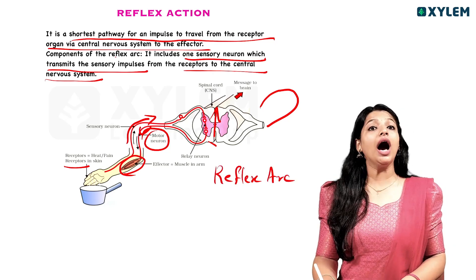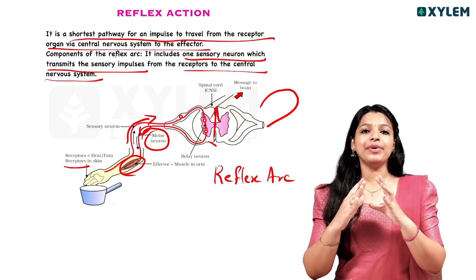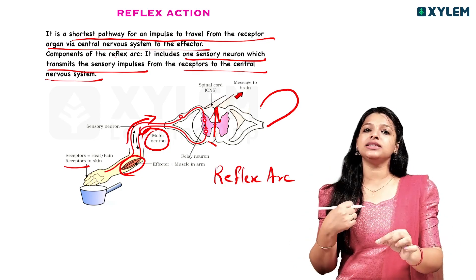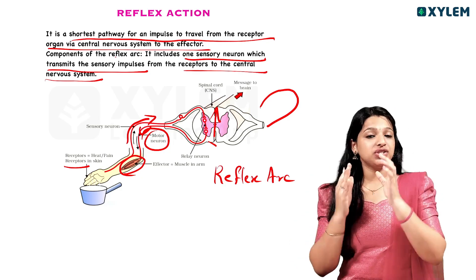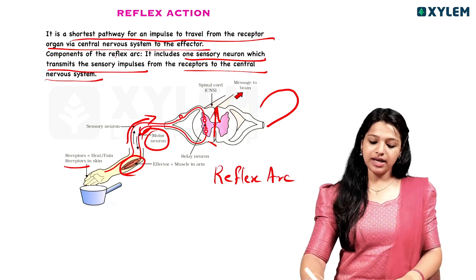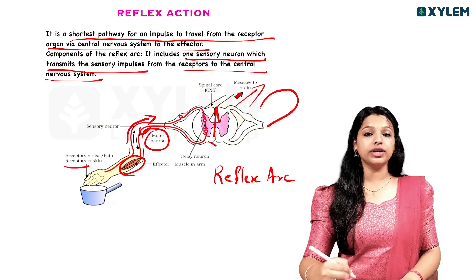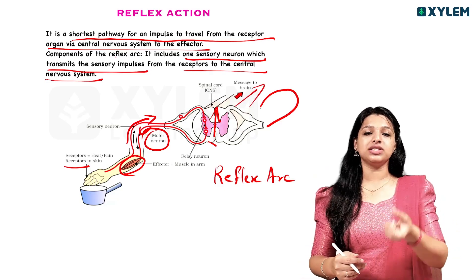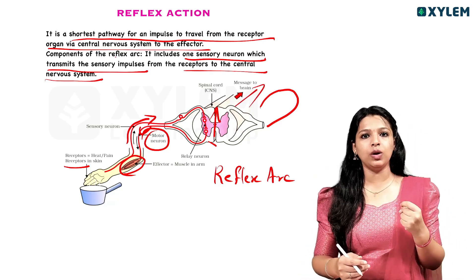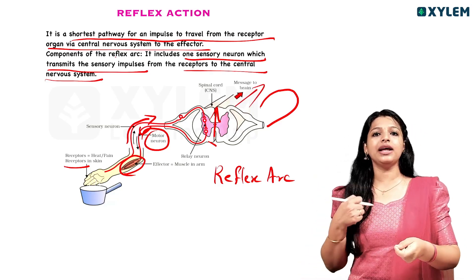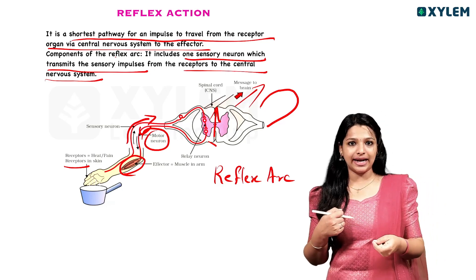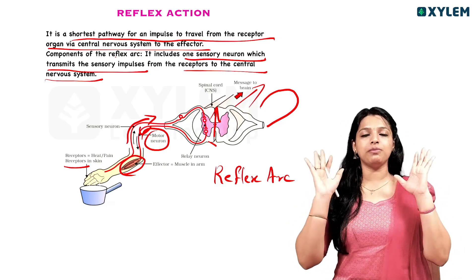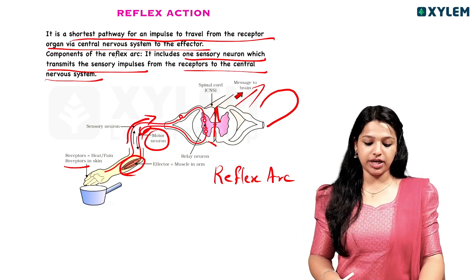The components of the reflex arc: we see heat as a stimulus, then receptors in our skin, then the sensory neuron sends information to the spinal cord, then the relay neuron, then the motor neuron, and finally muscle action. This arc shape is what we call the reflex arc. The reflex action is now clear.